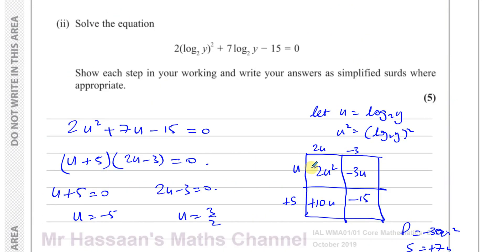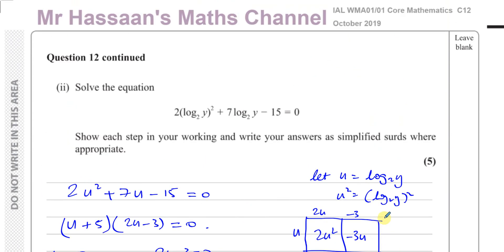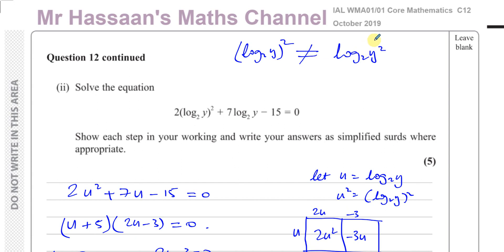That finishes question 12 part 2. The most important point is that log base 2 of Y, all squared, is not the same as log base 2 of Y with just the Y squared — they're not the same and can't be treated the same. This question is actually a disguised quadratic.